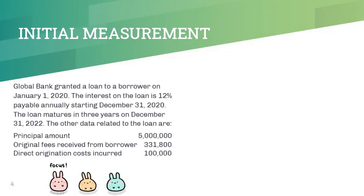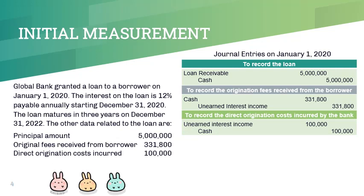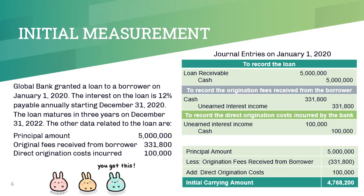Here is a sample illustration with journal entries. Origination fees received from the borrower is credited to unearned interest income, and direct origination fees is offset against or debited to unearned interest income. Since origination fees received from the borrower is higher, the amortization will result in an increase in interest income. The initial carrying amount is computed as: principal amount 5,000,000 pesos, less origination fees received from borrower 331,800 pesos, plus direct origination costs incurred 100,000 pesos, equals 4,768,200 pesos.